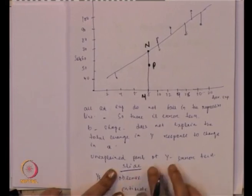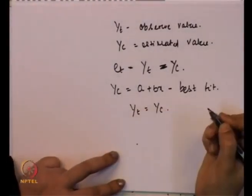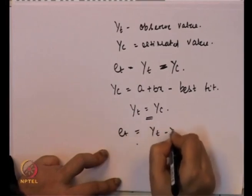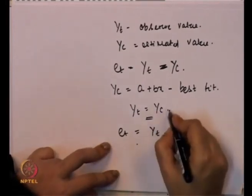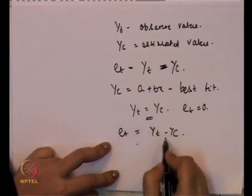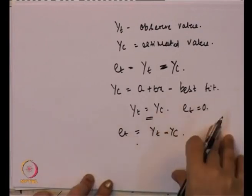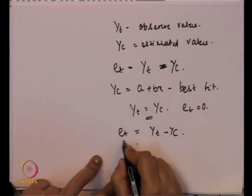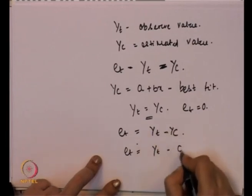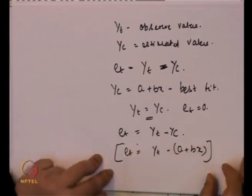Which one is best fit? The best fit is when y_t equals y_c. In this case, the error term equals y_t minus y_c, and if y_t = y_c, then the error equals 0 and we get a best fit. But since we always assume some amount of error exists — because there is a deviation between the regression line and the actual data point — we have some error term: y_t minus y_c, where y_c can also be written as a + bx. This is the functional form for the error term.